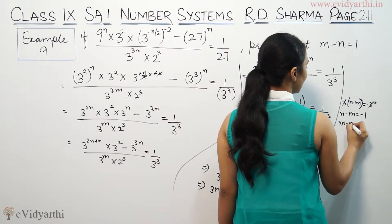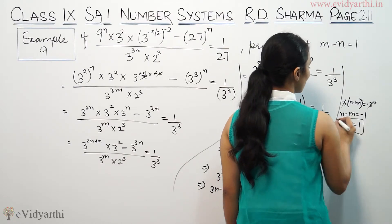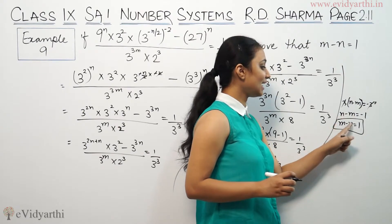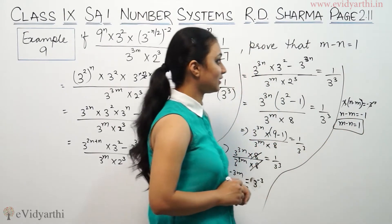Therefore, m minus n equals 1. Taking the negative sign common, we get m minus n equals 1. So this is what we had to prove.